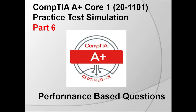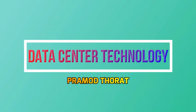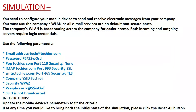Let's go to simulation Core 1 Part 6. This is the simulation or performance-based type question. The question is: you need to configure your mobile device to send and receive electronic messages from your company. You must use the company's WLAN as all email services are on default non-secure ports. The company's WLAN is broadcasting across the company for easier access, and both incoming and outgoing servers require login credentials.